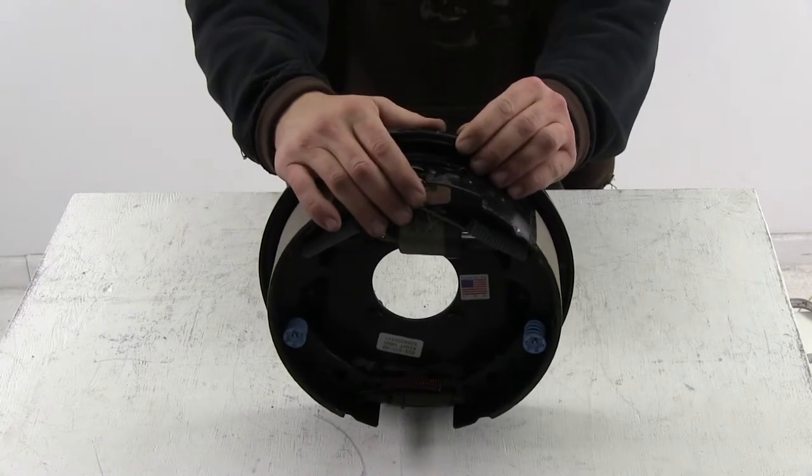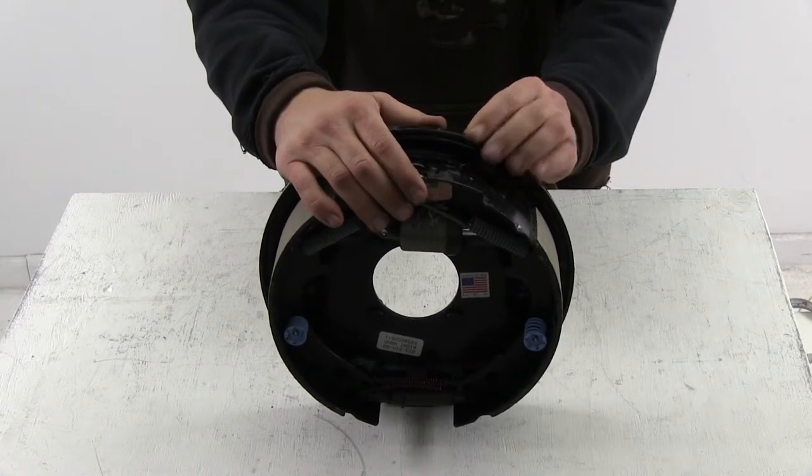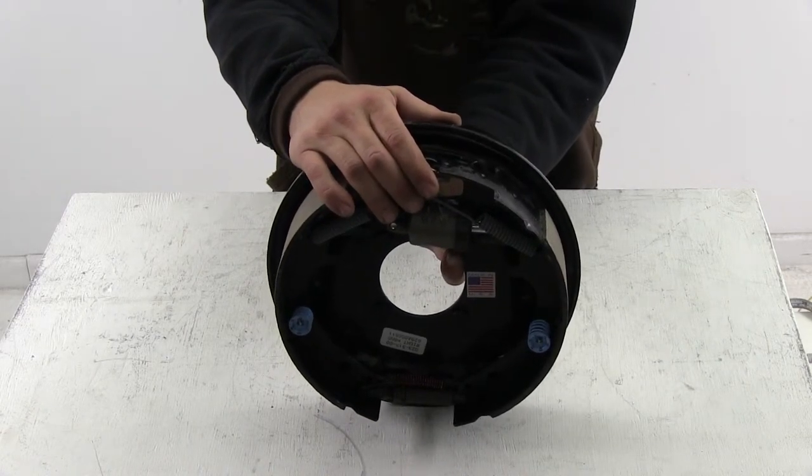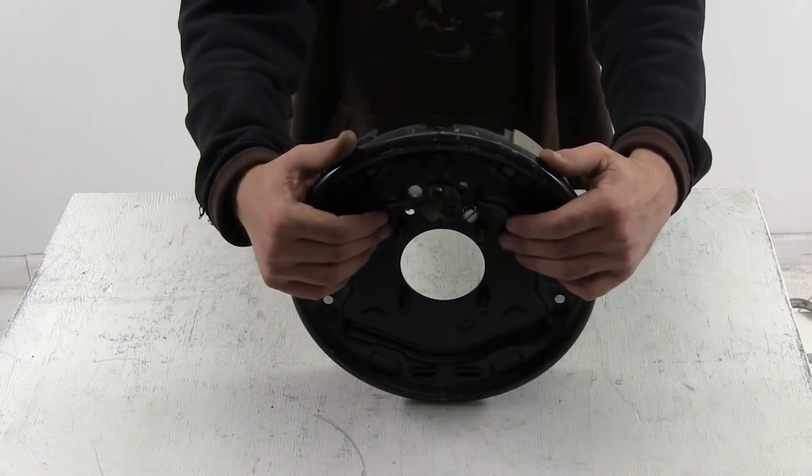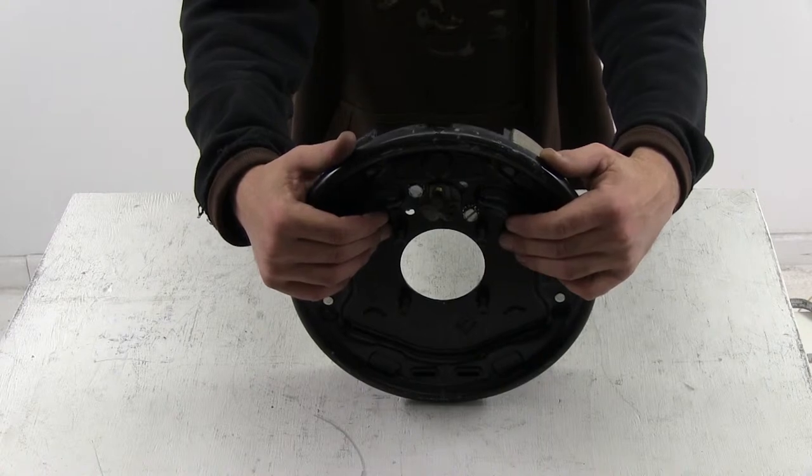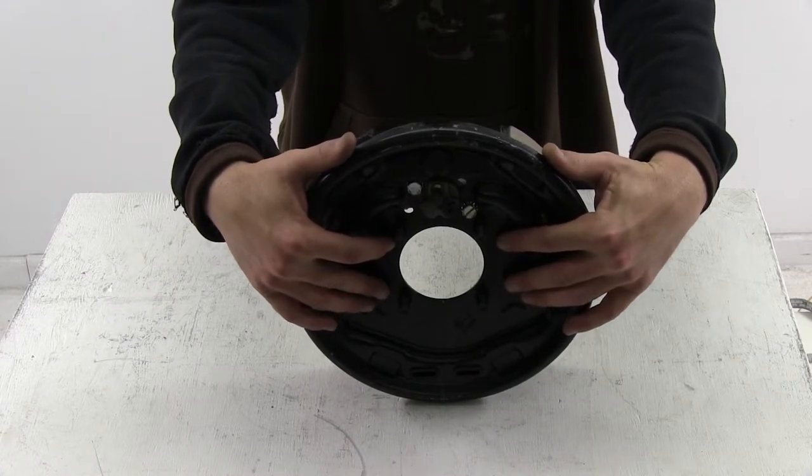When mounting our backing plate to our axle it has four studs pre-pressed in through the backing plate. It will bolt up to the axle flange through these four bolts. You want to make sure that you have a four bolt setup.